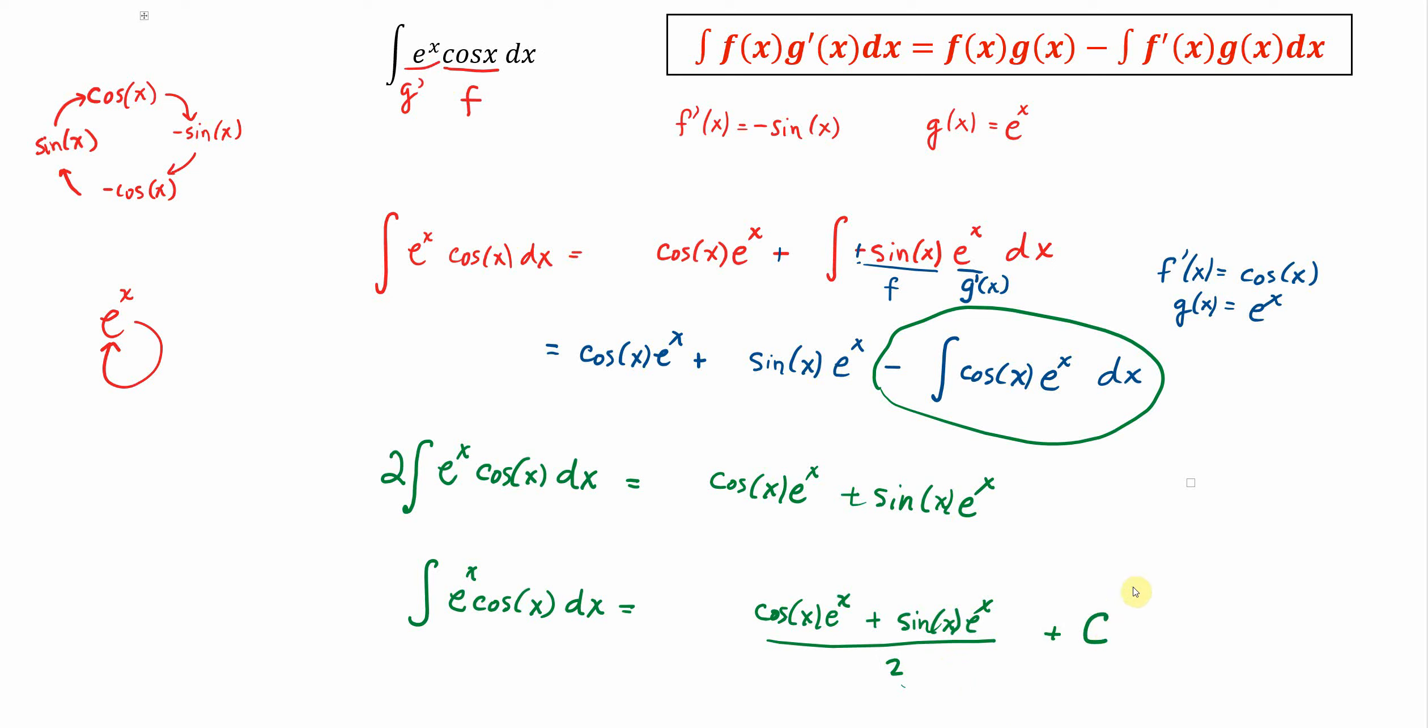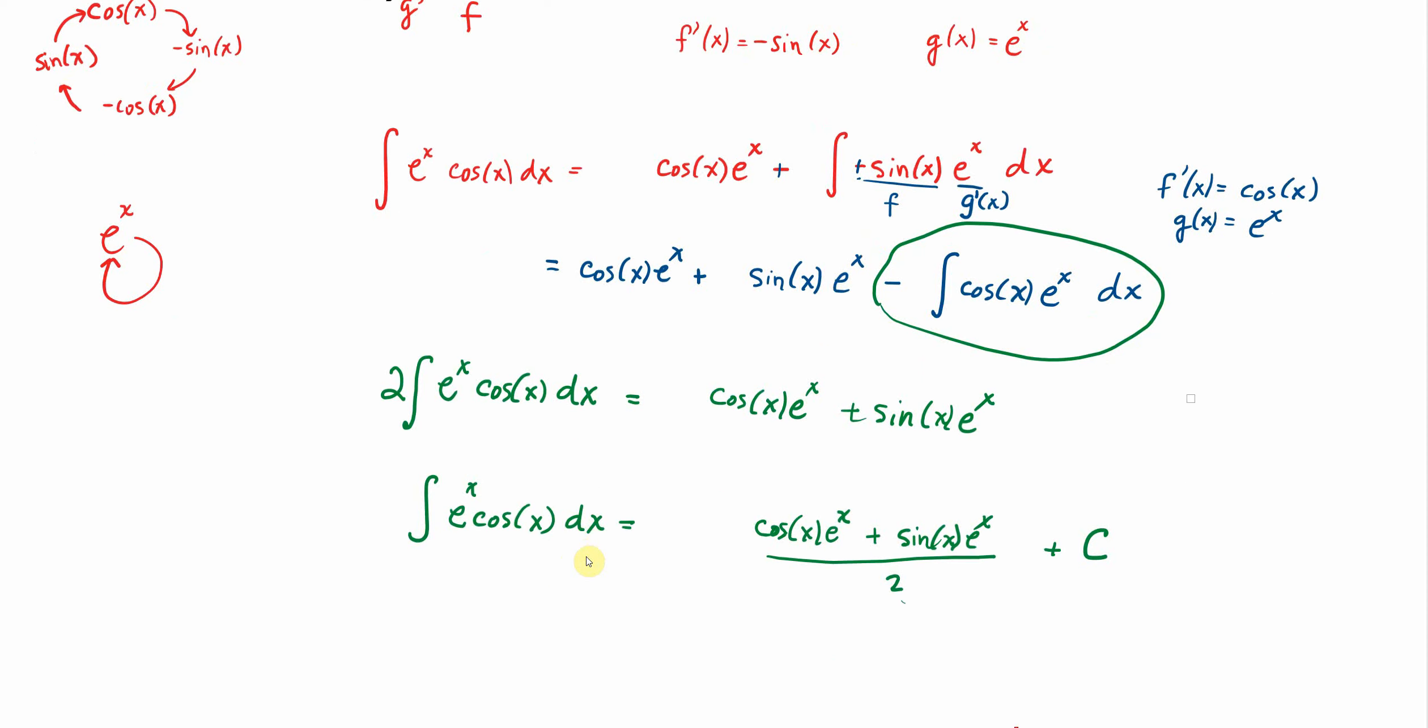So by creating the negative version of the problem in our solution, we rearrange that, do a little bit of algebra, and we get to our answer. And as you see here, we may be able to do some factoring. You may see this answer as e to the x over 2 times cosine plus sine plus a constant.